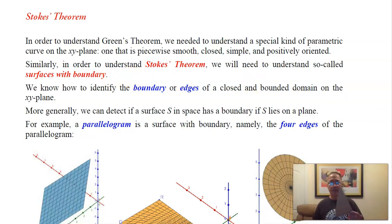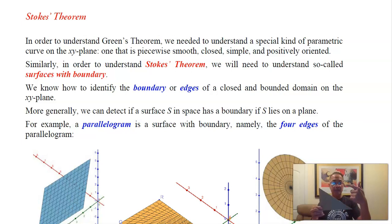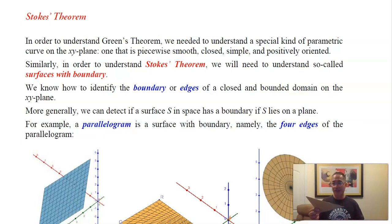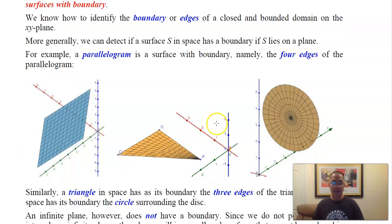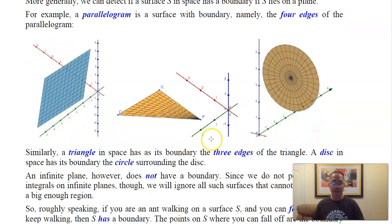When you have a plane figure like a triangle or a rectangle on the xy-plane, you can see right away that there are three edges making up the boundary of the triangle. Here you're inside the triangle, and here you are outside. If this is floating in space, you can still perceive the three edges that make up the boundary. Examples of plane geometric figures with a clear boundary include a parallelogram, a triangle, and a disc — the boundary of the disc is a circle.